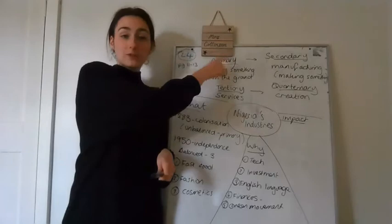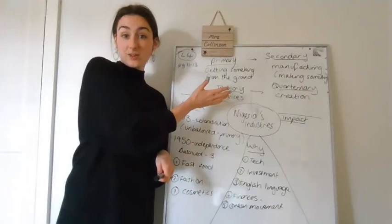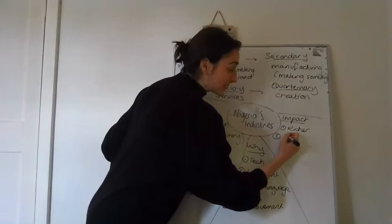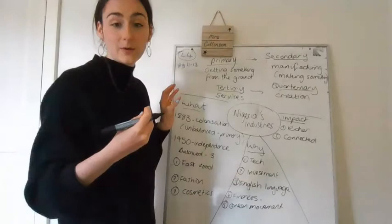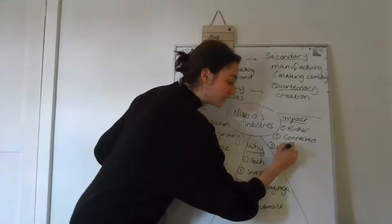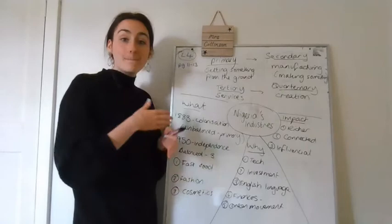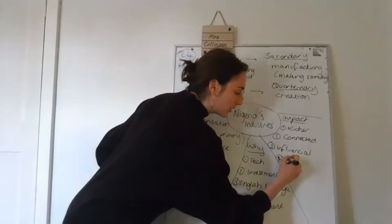So what impact has this had? If you start to move away from just primary to secondary and tertiary, the first thing you're going to do is you're going to make more money. So as a result, Nigeria has gotten richer. So one impact, it's richer. Another impact, it's more connected, more connected to other countries through the British language. It's also got a broader influence. So this makes them more influential as a country, more influential. You've also got more jobs. So not just more money, but more and better paid jobs. So more jobs.